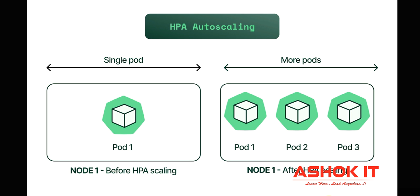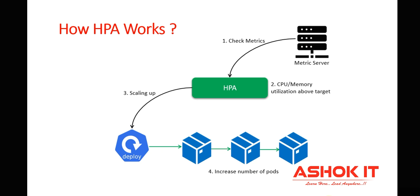How does horizontal pod autoscaler work? Before HPA scaling, a single pod is available; after HPA scaling, three pods are available. Internally, first we need to install metric server in our Kubernetes cluster. That metric server monitors the resources and limits we have configured. It gives inputs to HPA related to CPU or memory utilization. If the given threshold limit is crossed, HPA scales up our pods; if fewer requests are coming, it scales down our pods.